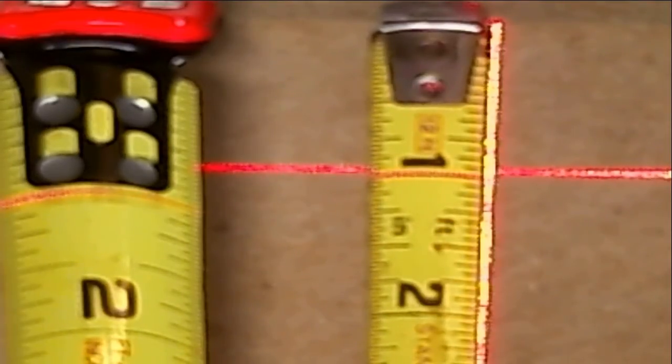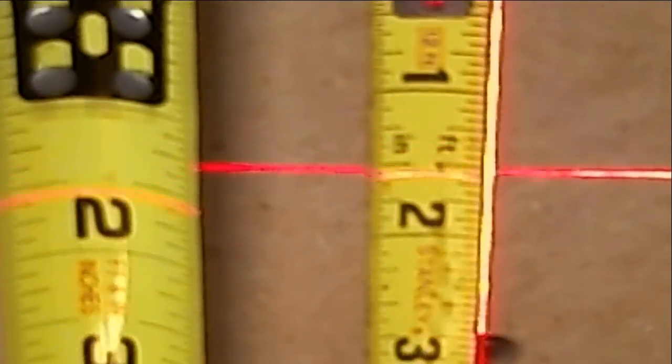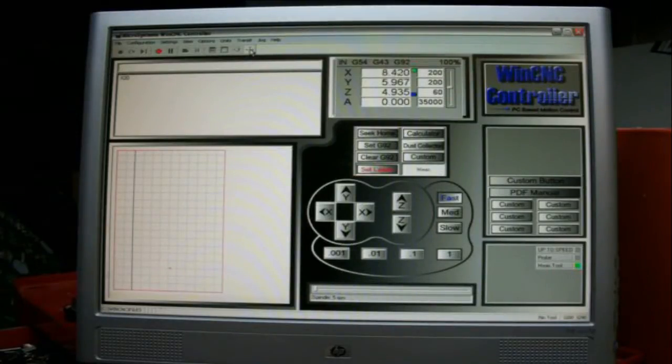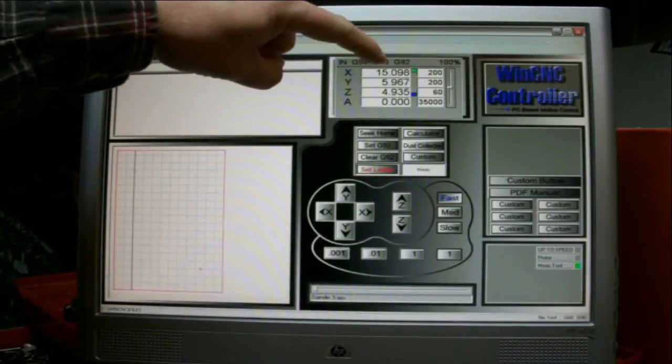So the first thing that I need to do now is command X to move 20 inches so I just type X20 and hit enter. It will move what it thinks is 20 inches.